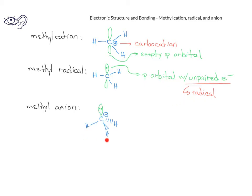The methyl anion is more different from the methyl cation and the methyl radical. For one, it has a different geometry. While the other two species were trigonal planar, the methyl anion has a pyramidal structure, due to the presence of the lone pair of electrons in the p orbital. Any time we have a carbon with a negative charge on it, we call that species a carbanion.